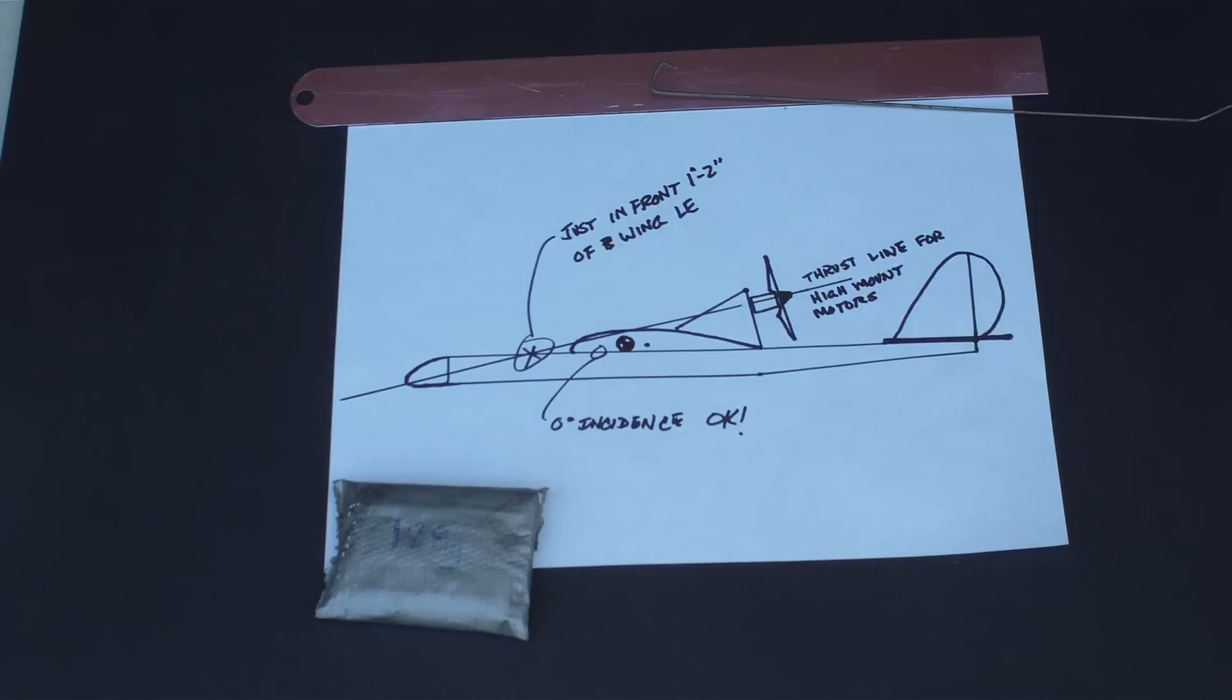Hey everybody, Mr. West here. Putting together a couple of short ideas to explain a couple of things. Motor thrust line, incidents versus no incidents between wing and horizontal stabilizer. I'll try to explain this to my best ability. A couple drawings here and we'll go through it real quick.